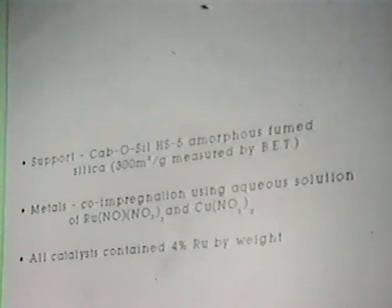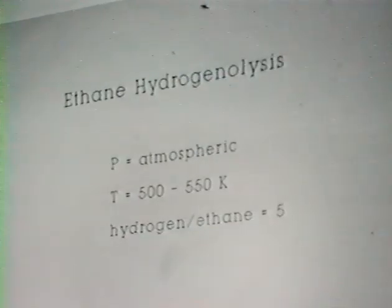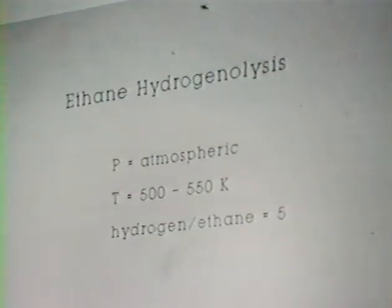We made some standard catalysts using silica as a support. For metal salts used in impregnation, we used nitrates to avoid chlorine contamination — earlier work with ruthenium trichloride as a ruthenium salt does make a difference in results. All catalysts have 4% by weight of ruthenium, and we vary the copper content to change the composition. Reaction conditions are one atmosphere, around 500 Kelvin, with a hydrogen-to-ethane ratio of about 5 to 1, all done in a differential reactor.